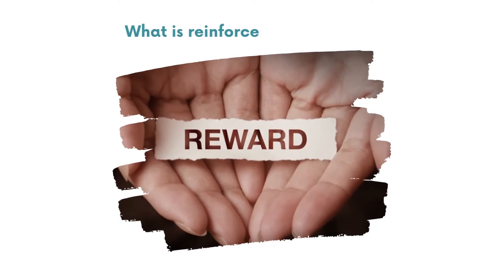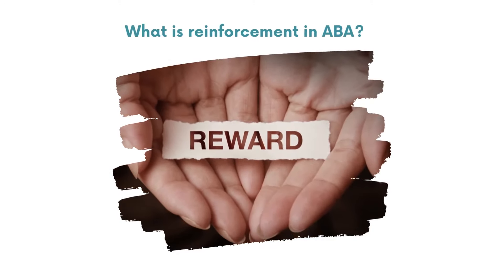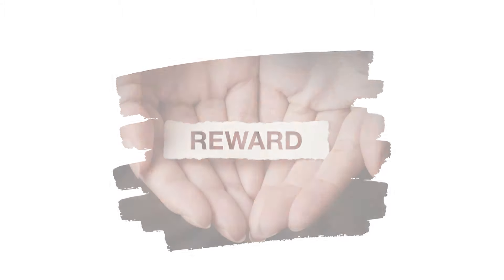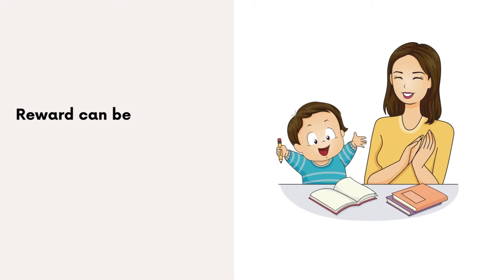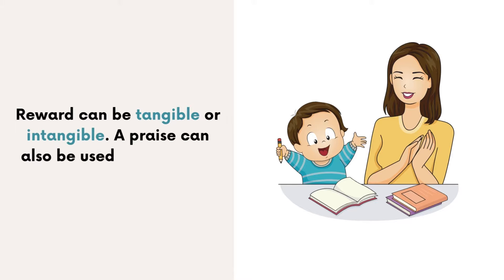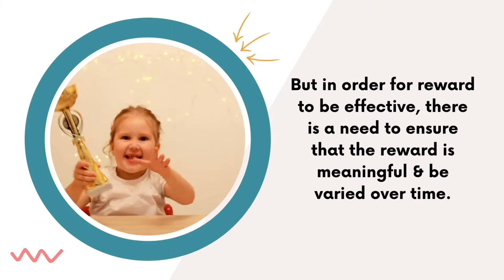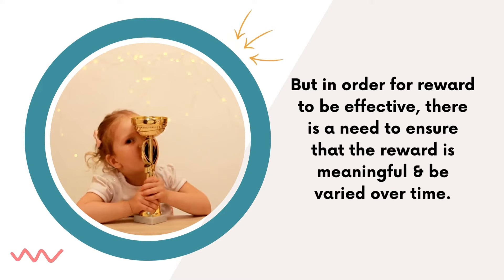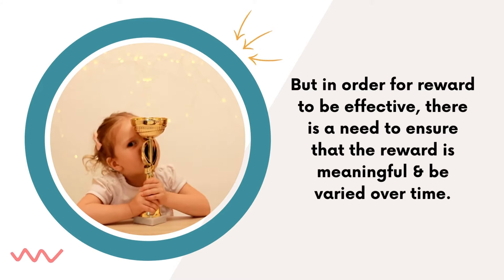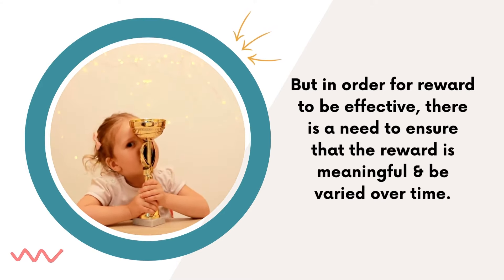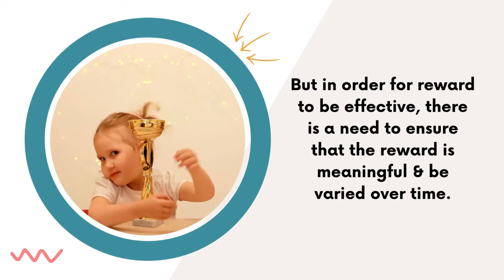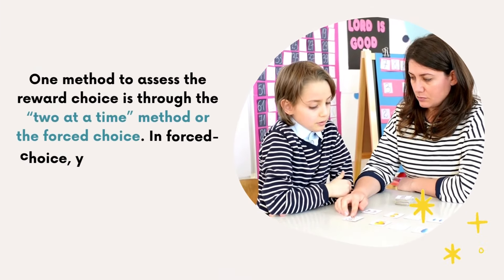What is reinforcement in ABA? For reinforcement to work, we need to use a reward as a reinforcer. A reward can be tangible or intangible. Praise can also be used as a reward. But in order for the reward to be effective, there is a need to ensure that the reward is meaningful and varied over time. So there should be a process to assess reward choice.